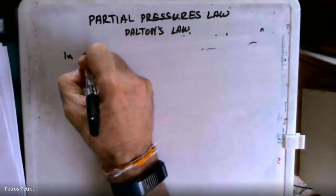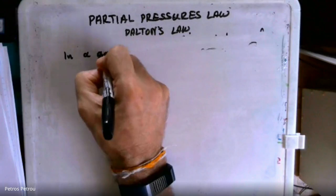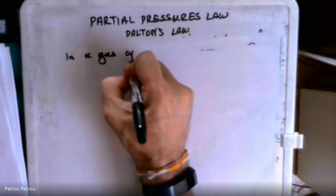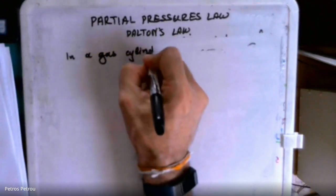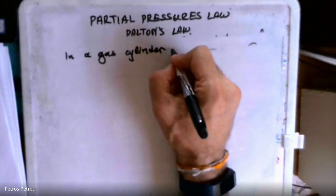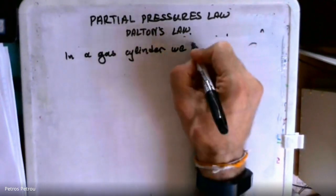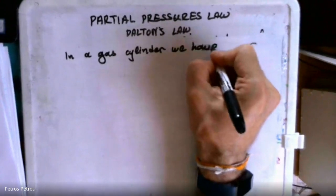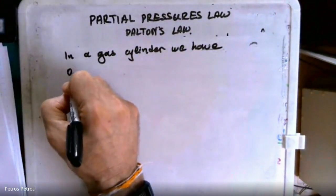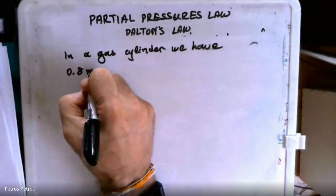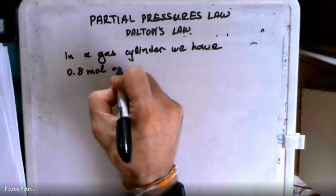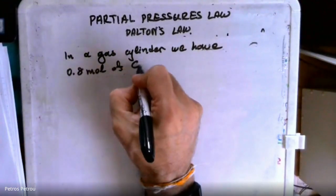In a gas cylinder, we have 0.8 moles of gas, 0.9 moles of CO2.